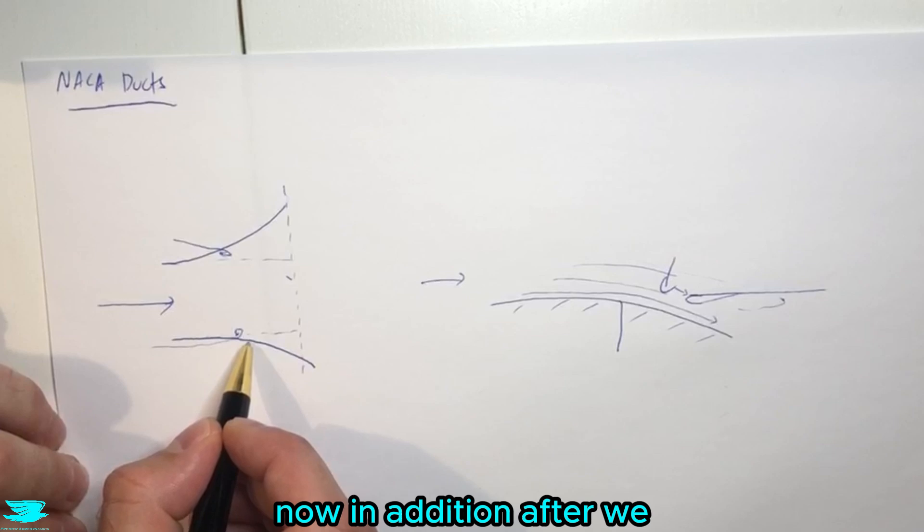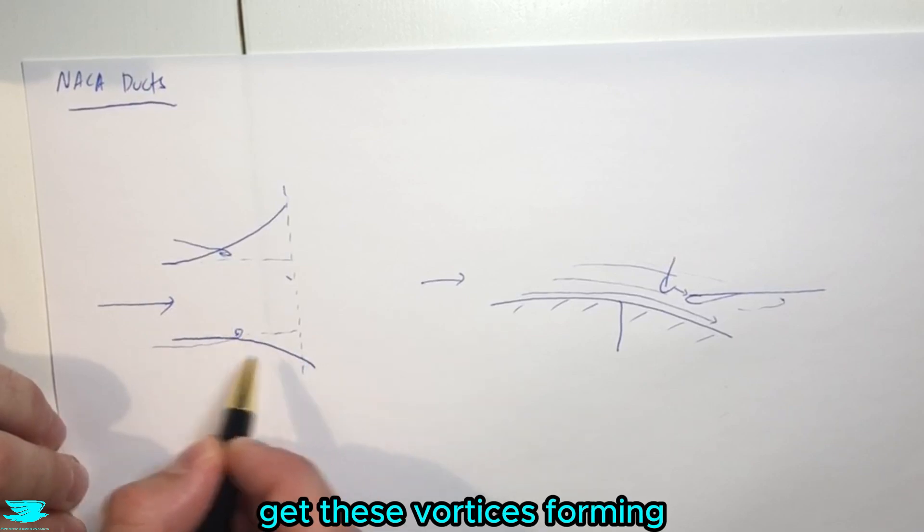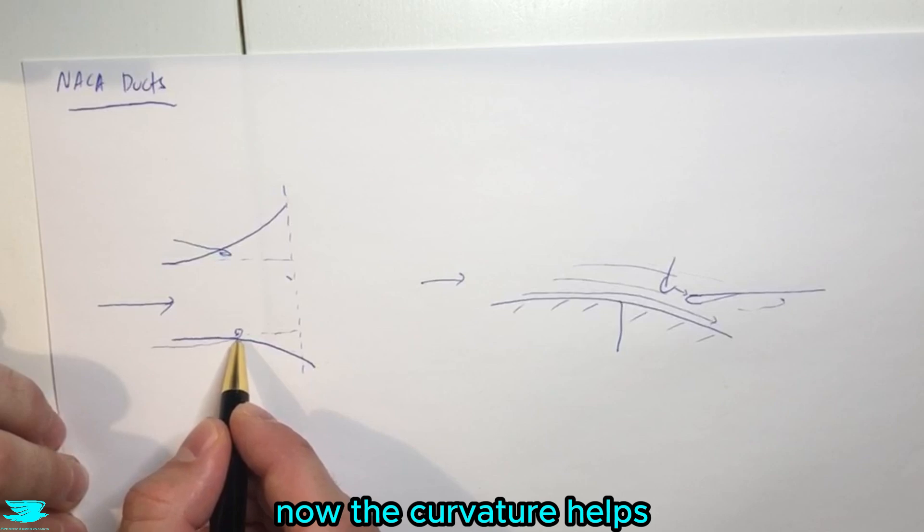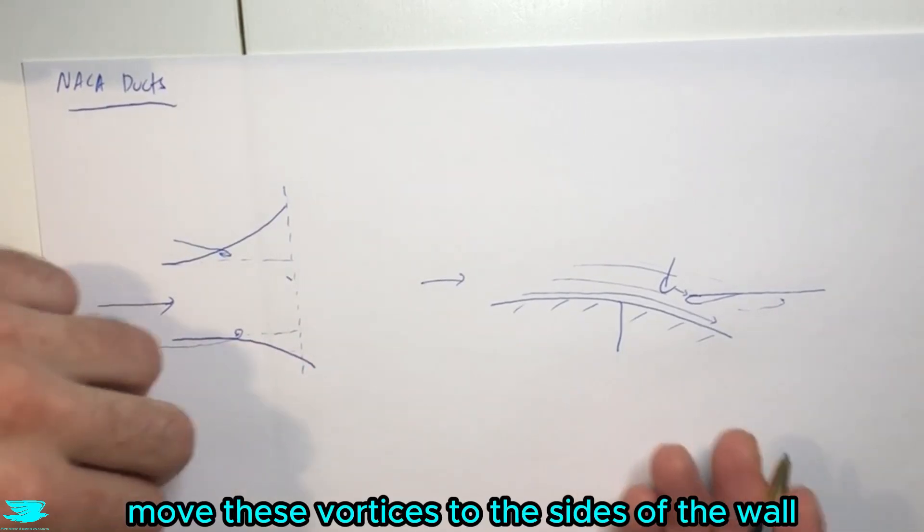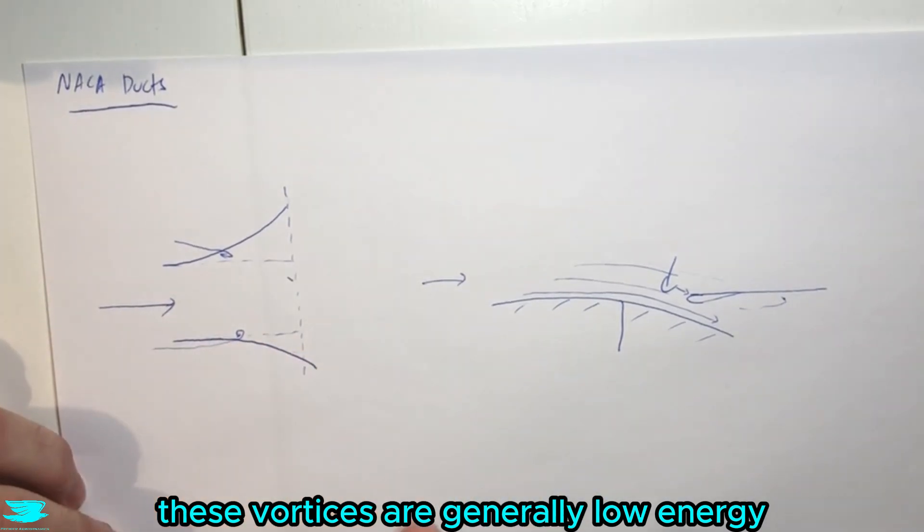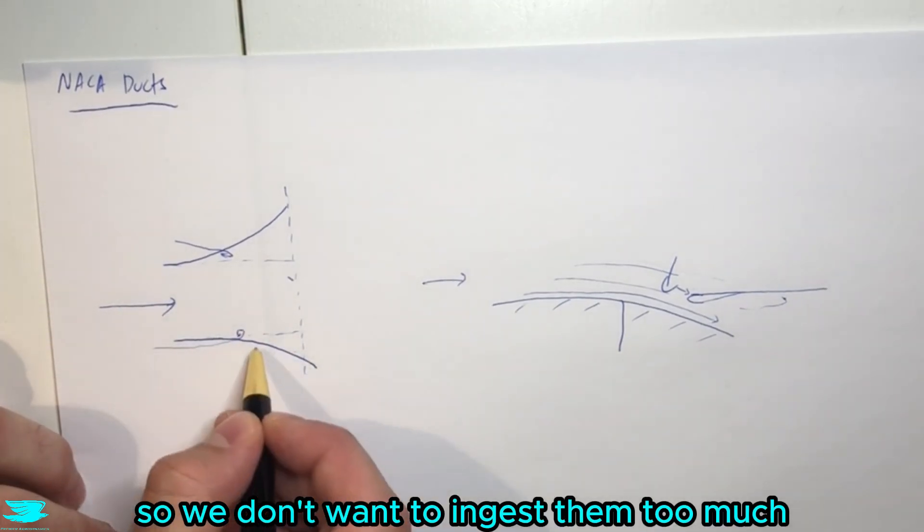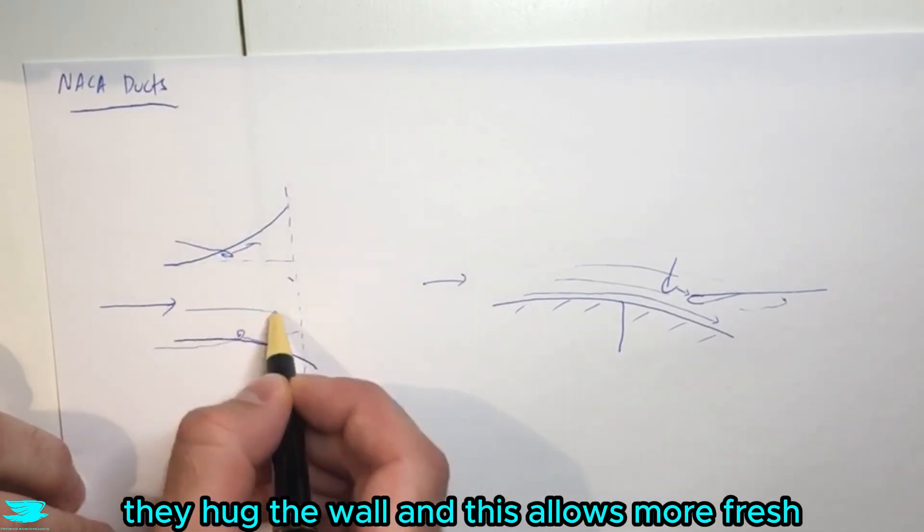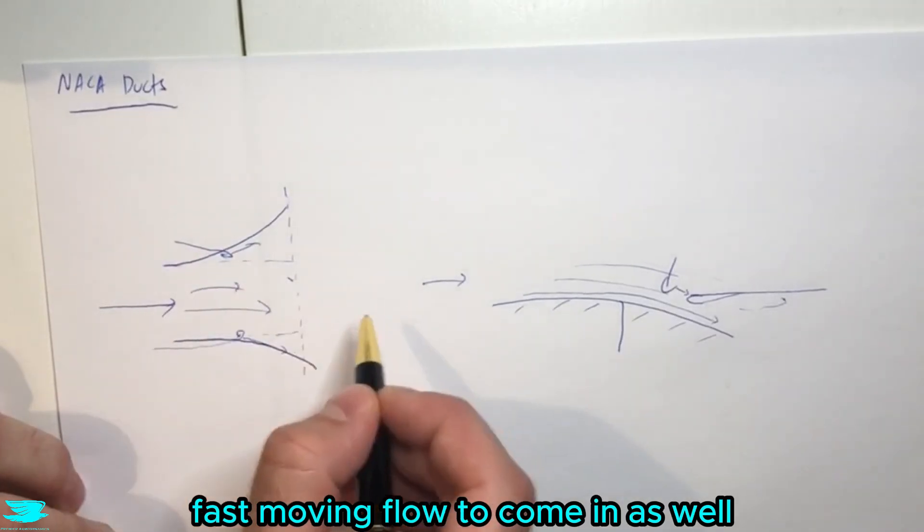Now in addition, after we get these vortices forming, and we're kind of down here now, the curvature helps move these vortices to the sides of the wall. And the reason why this is important is because these vortices are generally low energy, so we don't want to ingest them too much. So we sort of move them around to the outer a little bit, they hug the wall, and this allows more fresh, faster moving flow to come in as well.